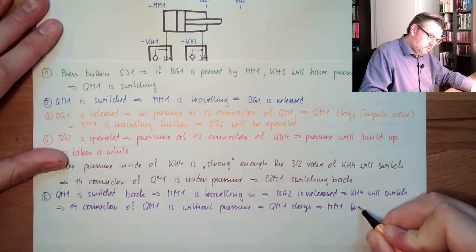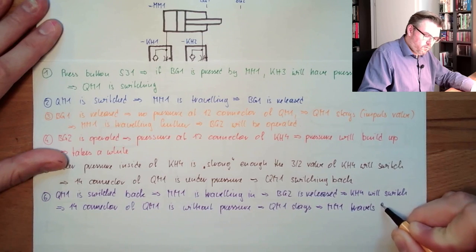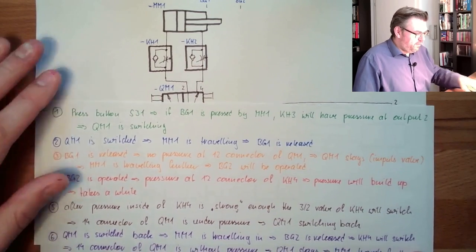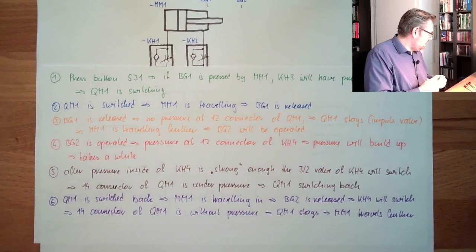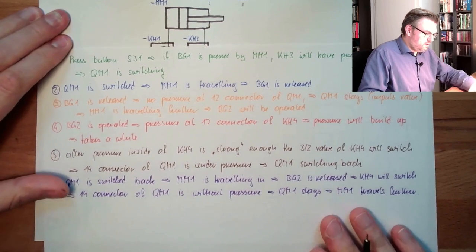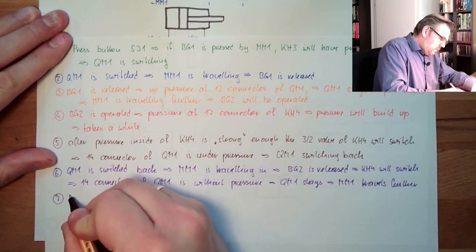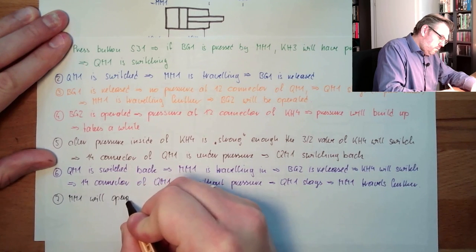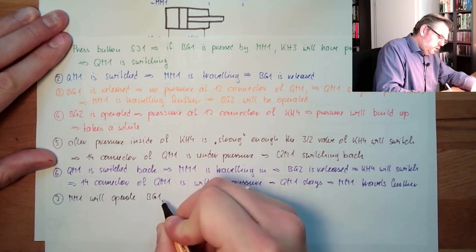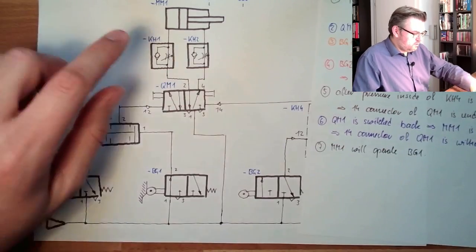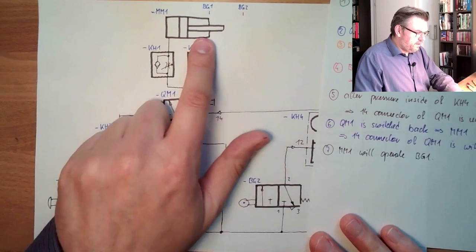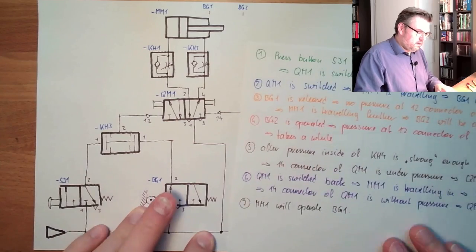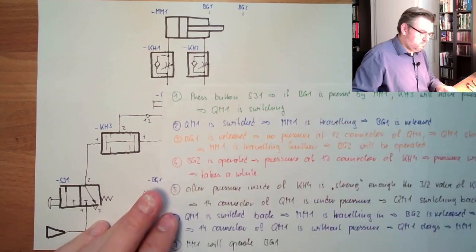So the 1.4 connector now is then without pressure. QM1 will stay. Because here is no pressure. So we will stay. And that's it. QM1 stays, MM1 travels further. So now we are just traveling further. And then, last but not least, number seven: MM1 will operate PG1. So we, and with it traveling completely in, MM1 will then operate the PG1. And this will press. And we are at the beginning. That's it.